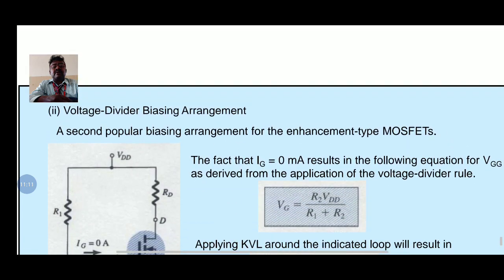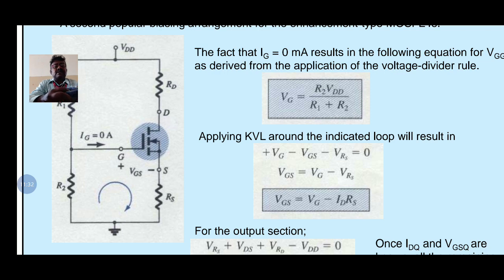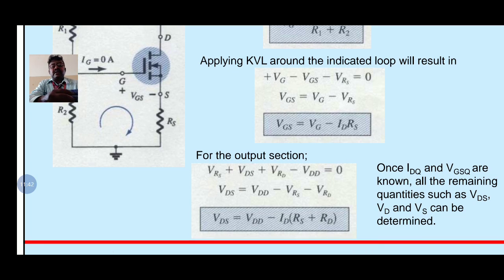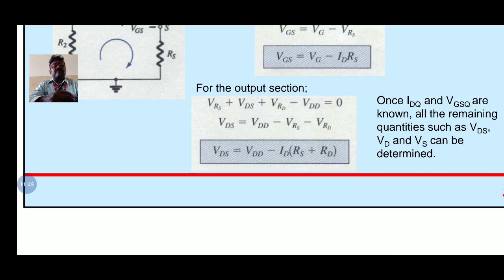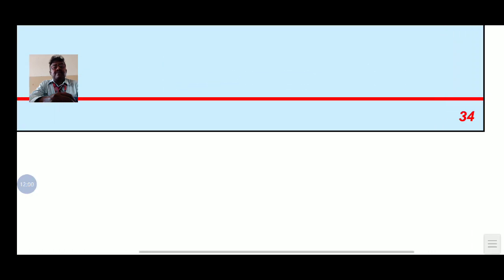The last configuration is the voltage divider bias arrangement for the enhancement type MOSFET. Since IG equal to 0 amps, using the voltage divider rule: VG equal to R2 into VDD divided by R1 plus R2. Applying KVL around the indicated loop: VGG minus VGS minus VRS equal to 0, so VGS equal to VG minus ID into RS. For the output section: VDS equal to VDD minus ID into RS plus RD. Once IDQ and VGSQ are known, all remaining quantities such as VDS, VD, and VS can be determined.